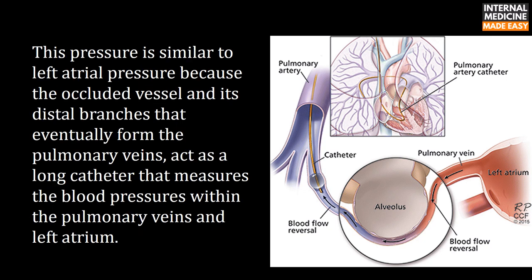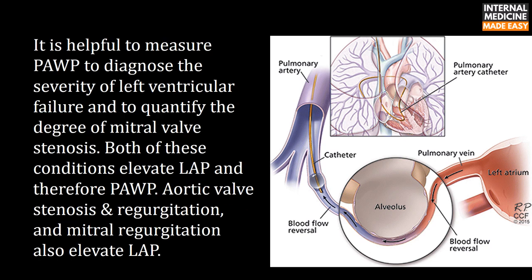This pressure is not due to pulmonary arterial flow, but due to the reversal of flow from the pulmonary vein. This pressure is similar to left atrial pressure because the occluded vessel and its distal branches that eventually form the pulmonary veins act as a long catheter that measures blood pressures within the pulmonary veins and left atrium. It is helpful to measure pulmonary artery wedge pressure to diagnose the severity of left ventricular failure and to quantify the degree of mitral valve stenosis.